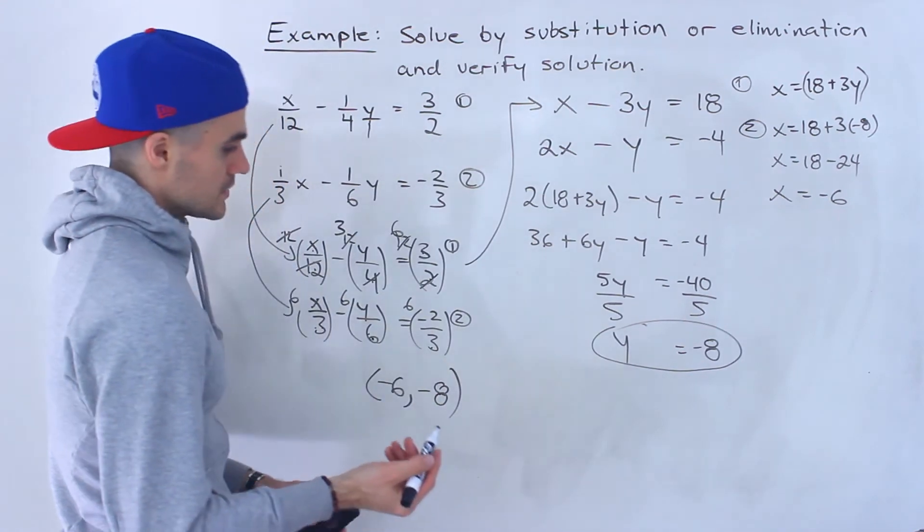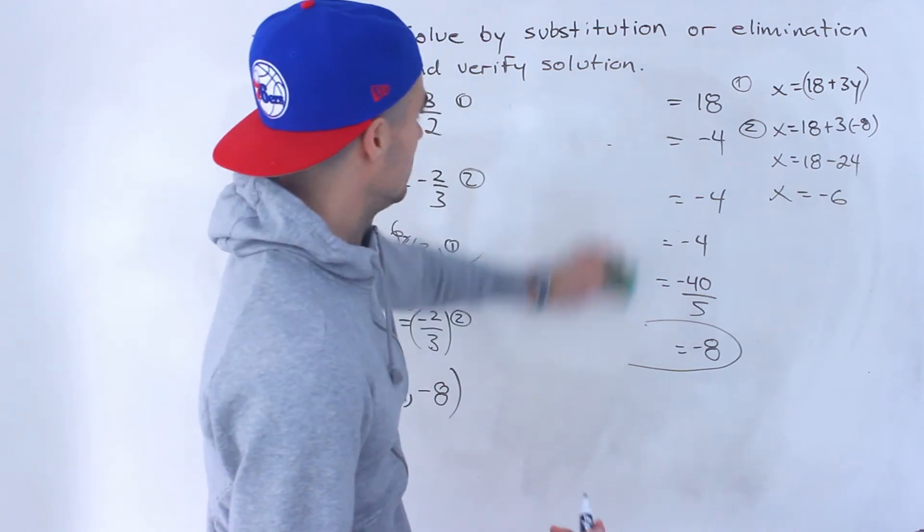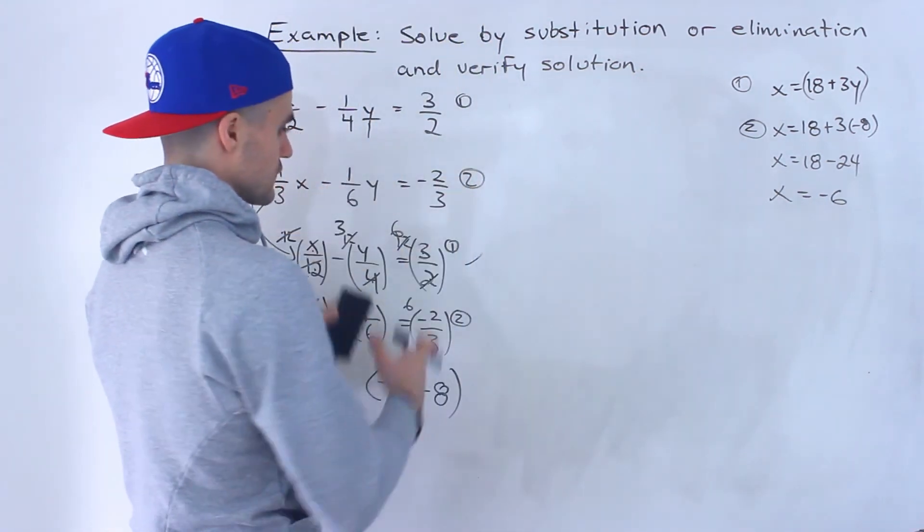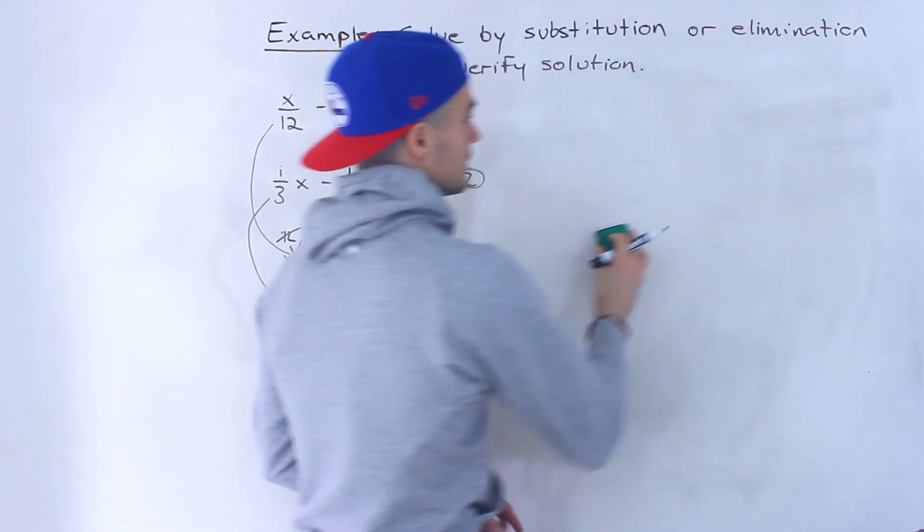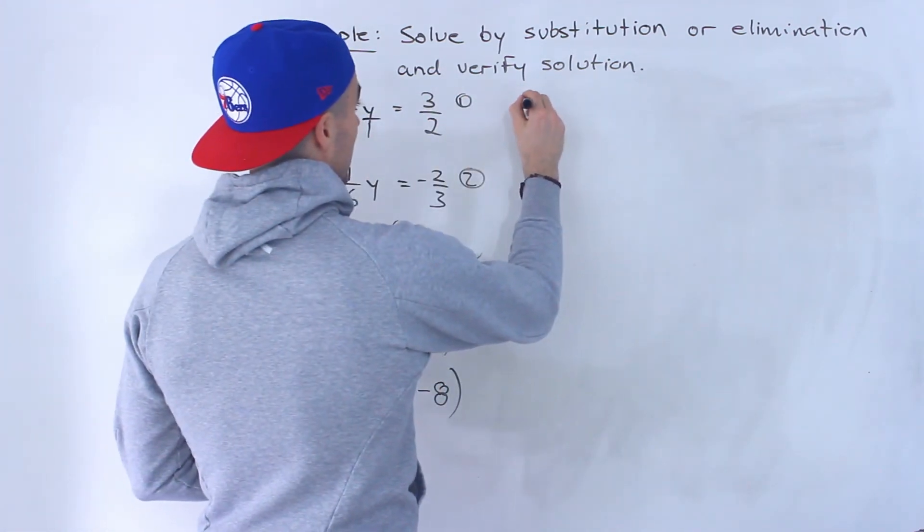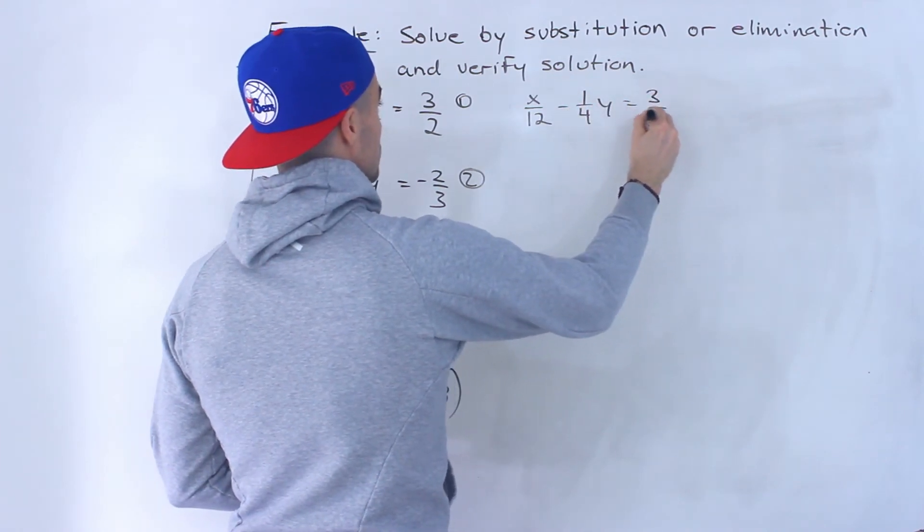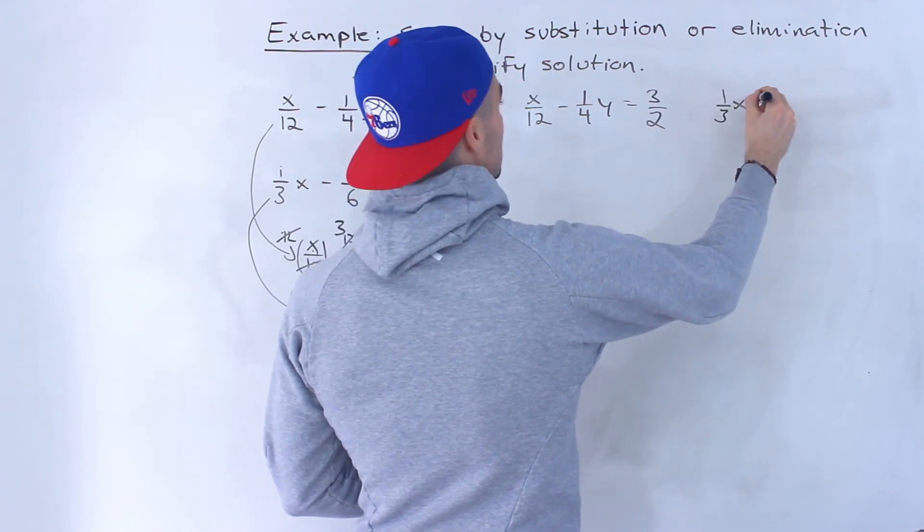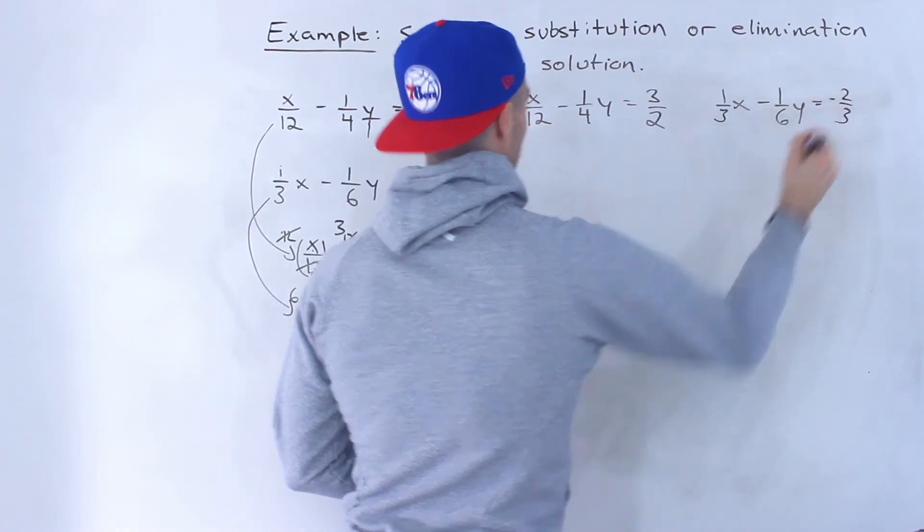And now what we could do to verify it. We would plug in. This one's going to be tougher to verify because of these fractions. But nevertheless, what we do is we take our solution and we plug it in to both of the original lines to verify it. So we'll have x over 12 minus 1 over 4y equals 3 over 2. That's the first line. Then we'll have 1 over 3x minus 1 over 6y equals negative 2 over 3.